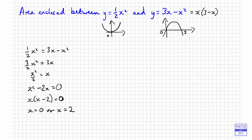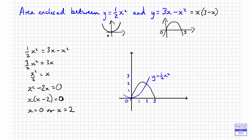So we have two intersection points at x equals 0 and x equals 2, and that helps us sketch both curves on the same axes. There's y equals half x-squared. Now putting in y equals 3x minus x-squared — we know the two curves meet where x is 2, and it goes through 3 on the axis. It must look something like this. It's only a sketch to give us an idea of the area we're trying to find — the area enclosed by the two curves.